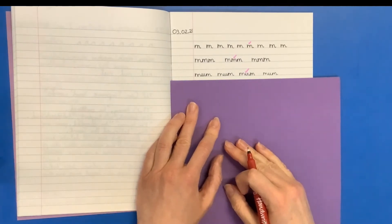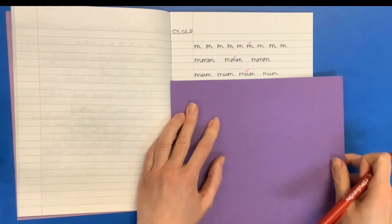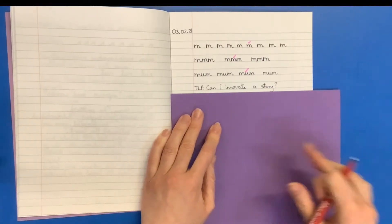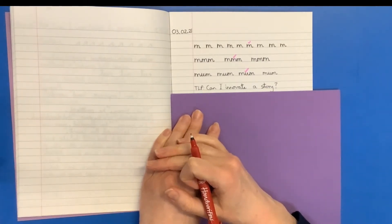Now, today we're going to be carrying on our work about Jim and the Beanstalk. And RTLP is can I innovate a story? So what that means is we're not starting a story totally from scratch with no ideas at all. We're going to use Jim and the Beanstalk to give us a structure for a story, but we're going to put in our own ideas.